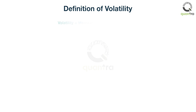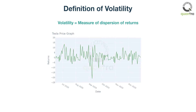But what is the textbook definition of volatility? Volatility is the measure of the dispersion of returns for a given asset or index. In simple words, it tells us how much an asset moves up or down with respect to the mean in a given time period.